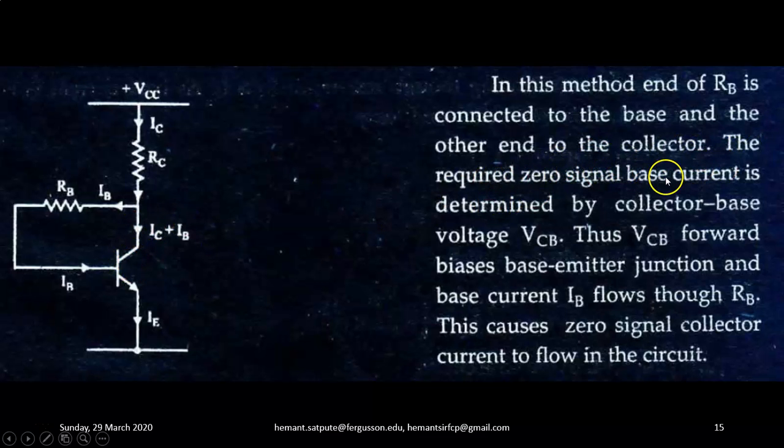The required zero signal base current is determined by the collector to base voltage VCB. This collector to base voltage will decide the base current flowing inside the transistor. Thus, VCB forward biases base emitter junction and base current IB flows through RB. This causes zero signal collector current to flow in the circuit. This is a very simple arrangement.